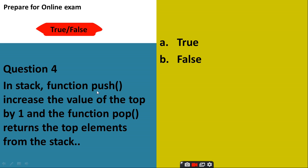In stack, function push increases the value of the top by one. And the function pop returns the top element from the stack. True or false? Yes. When we are inserting the element, this operation is known as push. It increases the top value by one. And when we are removing the element from the stack, this operation is known as pop. And it is incrementing the value of pointer by one.